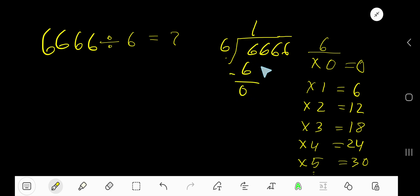6 subtract 6 is 0. Bring down this 6. 6 goes into 6 again one time. One times 6 is 6, subtract to get 0. Bring down the next 6. 6 goes into 6 how many times? One time.